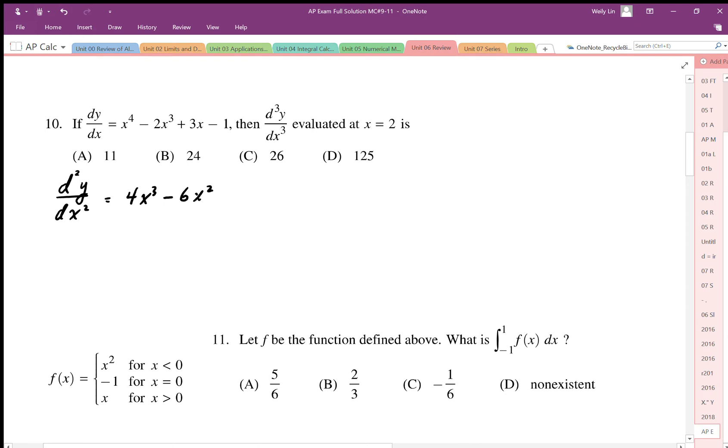And we end up with 4x cubed minus 6x squared. And that's it. So we want to do this again because we need to have the third derivative. So we're going to differentiate again. So d3y over dx cubed. This is going to be 12x squared minus 12x. So there's my third derivative, which is essentially the second derivative of my original expression.